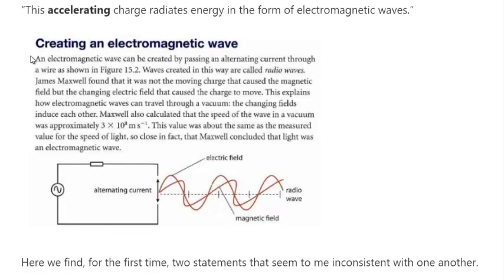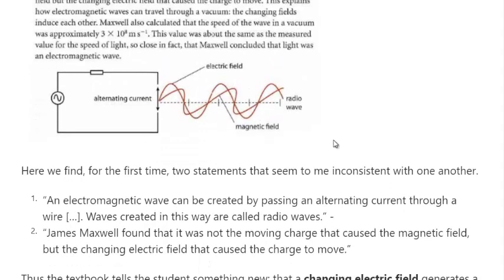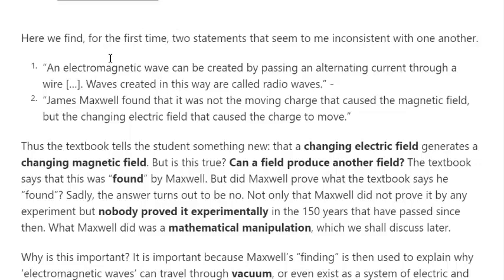In order to emit electromagnetic waves, charges need to be accelerating — constant motion can create a magnetic field but does not create electromagnetic waves. An electromagnetic wave can be created by passing an alternating current through a wire. James Maxwell found that it was not the moving charge that caused the magnetic field but the changing electric field that caused the charges to move. This explains how electromagnetic waves can travel through a vacuum — the changing fields induce each other. Maxwell also calculated the speed of the waves in vacuum as the speed of light, and concluded that light is an electromagnetic wave.